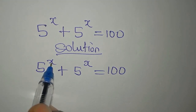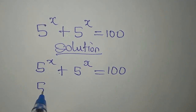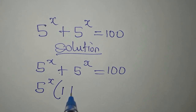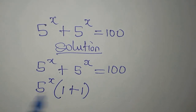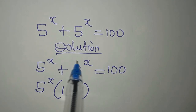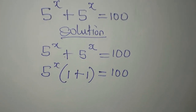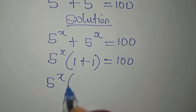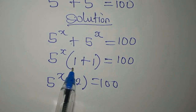We have 5 to the power of x plus 5 to the power of x — by the way, we have the same thing, so we can factorize 5 to the power of x, leaving one here and one there. If I open this bracket, I'll have the same thing back, so this is equal to 100. This gives us 5 to the power of x multiplied by 2 equals 100, since 1 plus 1 is 2.